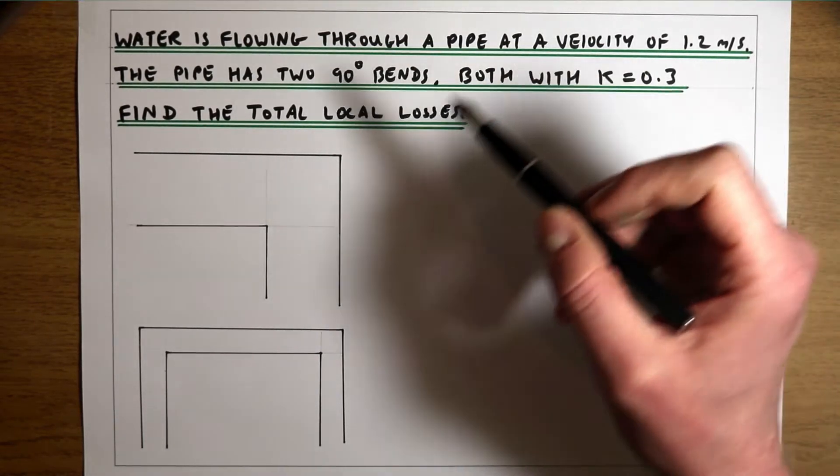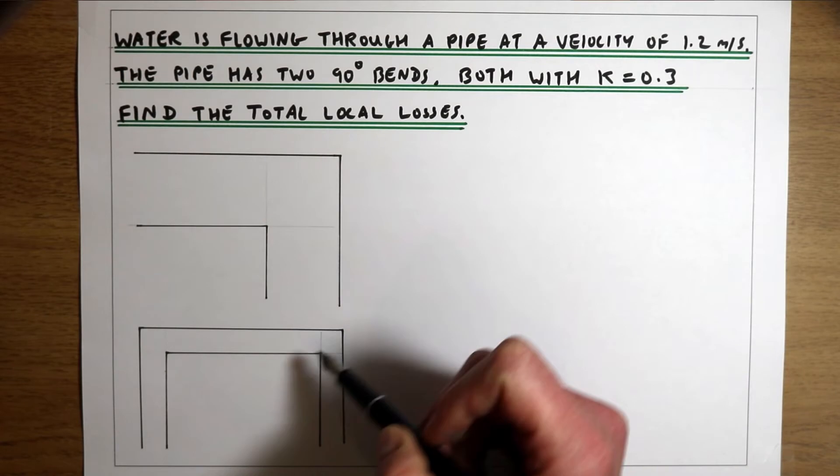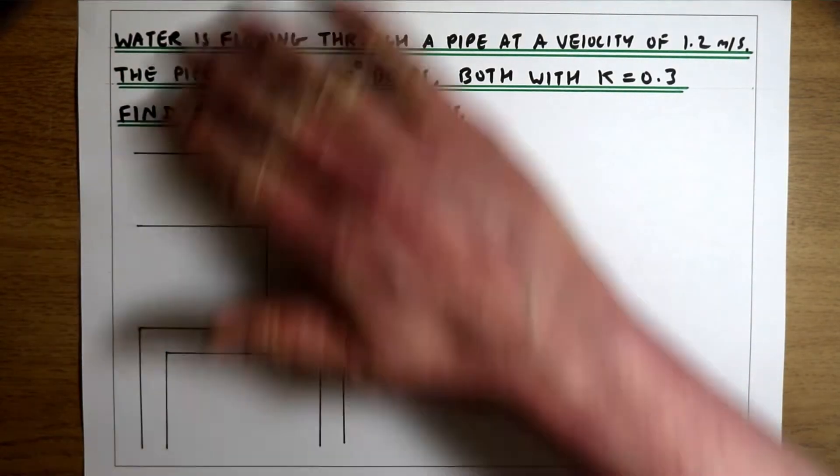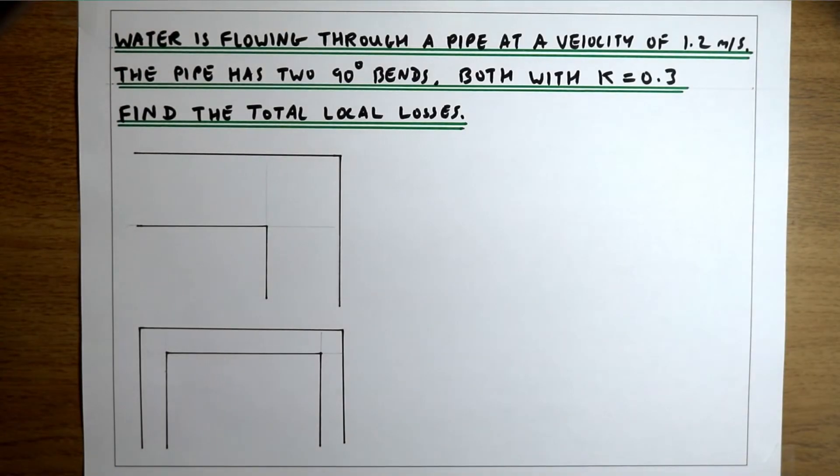We need to find the local losses due to these two bends. In the previous video, we were looking at continuous losses due to friction in a long pipe. As well as continuous losses due to friction, you also get local losses due to things like pipe bends.